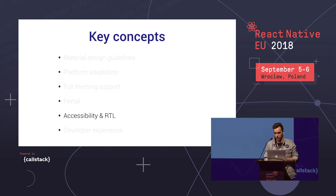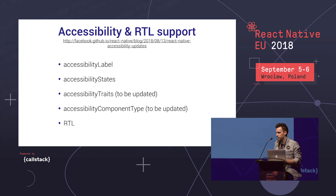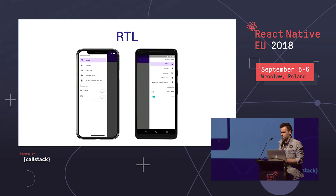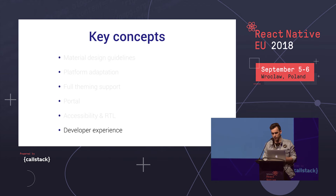Another key concept important to us in 2.0 is accessibility and right-to-left support. We've done a lot of work to make all our components accessible, and we need to keep working on this — we need help. We have some properties that need updating based on a recent React Native blog post about changes to accessibility APIs. We also received a great external contribution for right-to-left support. If you check the example app in the React Native Paper repository and toggle the right-to-left switch, you'll see all components supporting RTL languages.